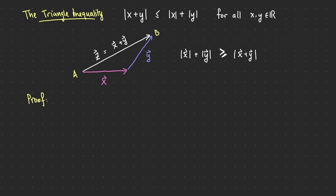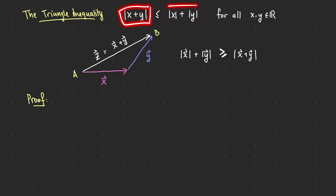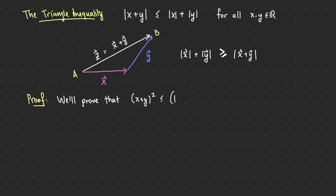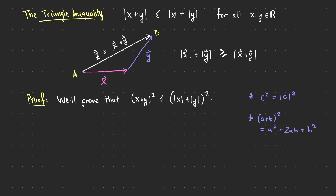Let's prove it rigorously by squaring both sides. Since both sides are non-negative, that's equivalent — we'll prove that (x + y)² ≤ (|x| + |y|)². You might ask about the absolute values, but squaring cancels any negatives anyway, so c² equals |c|². When you expand (a + b)², you get a² + 2ab + b², so there's a cross term.